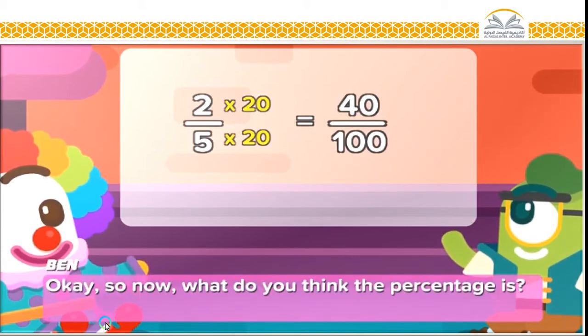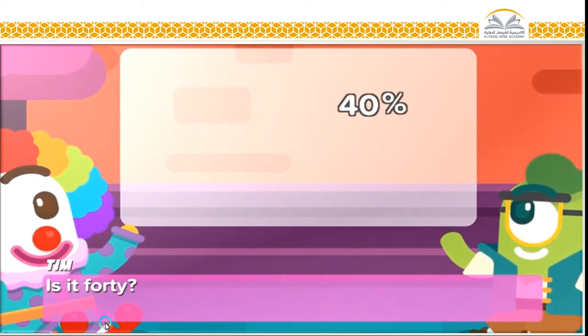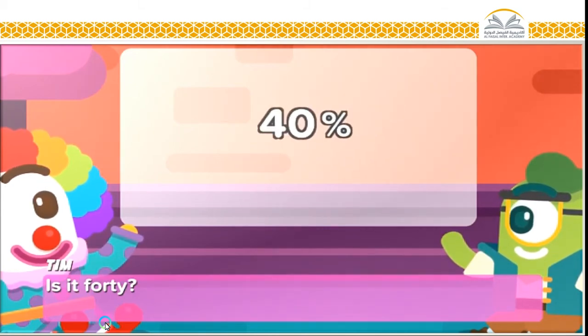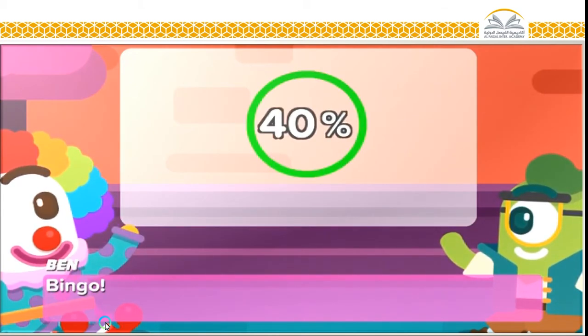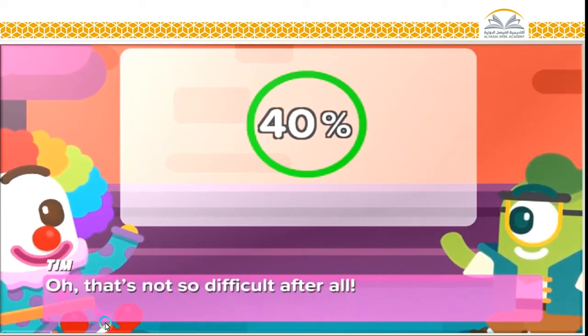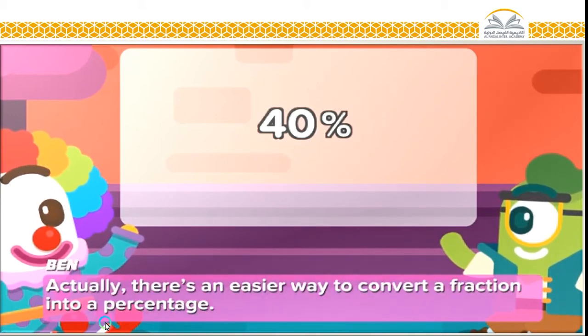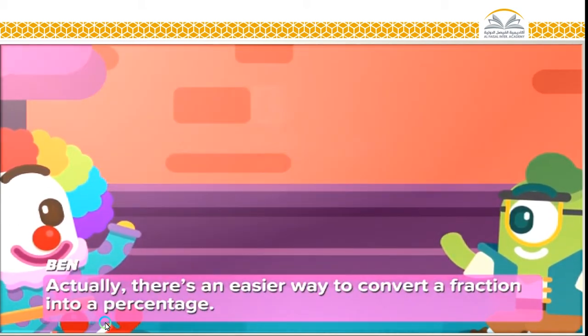That means we need to multiply both the numerator and the denominator of two-fifths by 20. So the equivalent of two-fifths is 40 over 100. Okay, so now, what do you think the percentage is? Is it 40? Bingo! Oh, that's not so difficult after all.